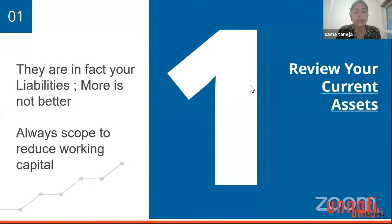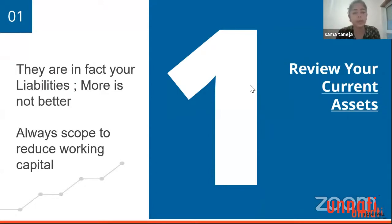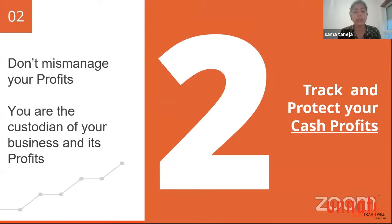Figure out what is the minimum working capital your business needs, and operate at that minimum. MSMEs tend to operate at the maximum because it is not efficiently managed — when you don't efficiently manage it, you need more and keep pumping it up. So try and have a target to reduce your working capital. As a CEO and business leader, you are the custodian of your business and its profits, so you must use this prudently for your business.